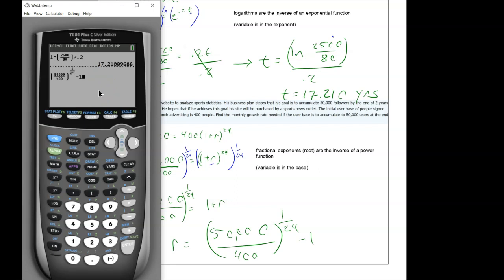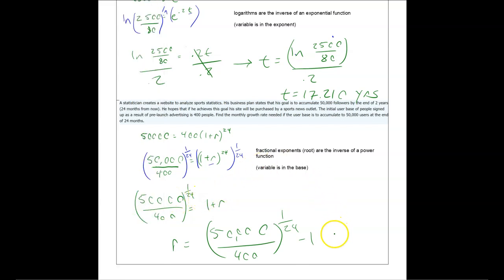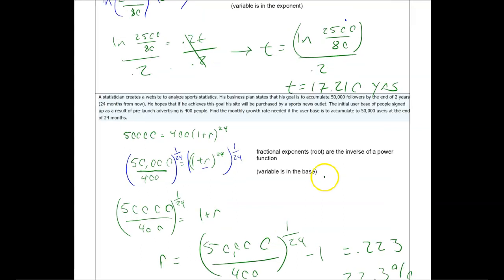Anytime we use decimals here in exponential functions, if we round them, that error gets kind of amplified by us multiplying those numbers together a bunch of times. So we're just going to type it in like that, and we get 0.223, or 22.3% growth rate.